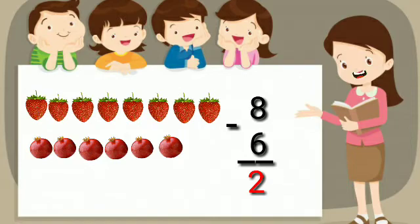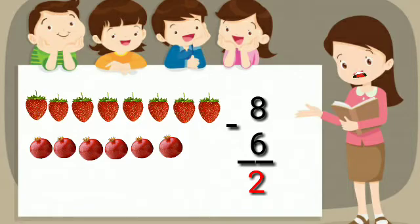There are 8 strawberries and 6 pomegranates. How many more strawberries are there? Let us subtract to find the answer.